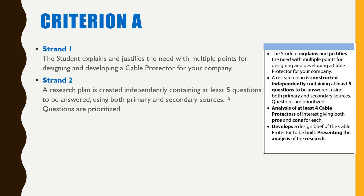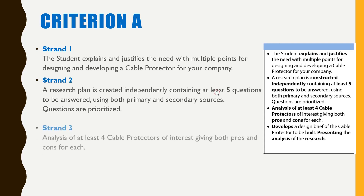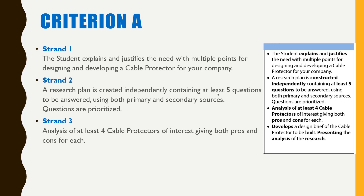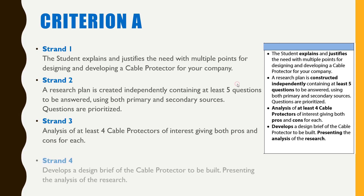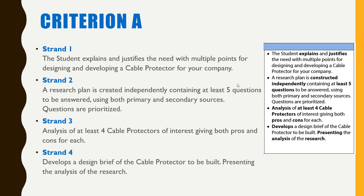Strand two: a research plan is created independently containing at least five questions to be answered using both primary and secondary sources, and questions are prioritized. Strand three is an analysis of at least four cable protectors of interest, giving both pros and cons of each. Strand four is developing a design brief of the cable protector to be built, presenting the analysis of the research.